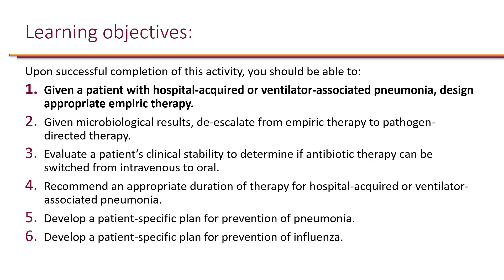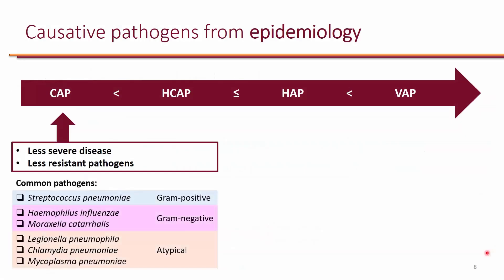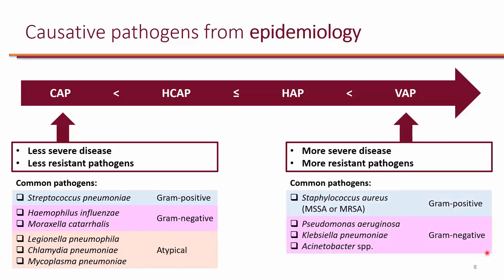Community-acquired pneumonia is a relatively less severe type of pneumonia caused by less resistant pathogens such as Strep Pneumo, H. flu, Moraxella catarrhalis, and atypical organisms. When we look at ventilator-associated pneumonia, it's relatively a more severe disease with mortality as high as 30%, and it's typically caused by more resistant pathogens.